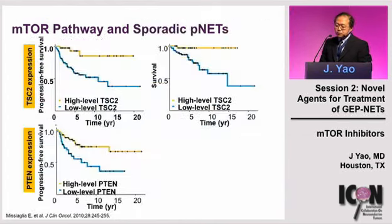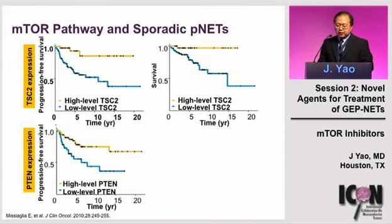Data from patients with pancreatic neuroendocrine tumors shows that low expression of TSC2 and PTEN — genes involved in the mTOR pathway — is associated with prognosis. Patients with low expression of TSC2 or PTEN have shorter progression-free survival and shorter overall survival.